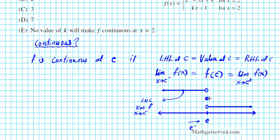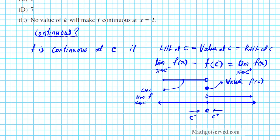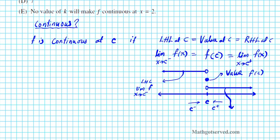At the point c itself, that is the value of the function, known as f of c. And then over here, when you're approaching c from the right side, that is the right-hand limit, symbolically the limit as x approaches c from the right of the function. So these three have to line up and be equal in order for the function to be continuous at c.